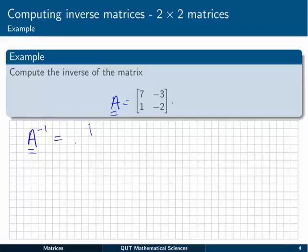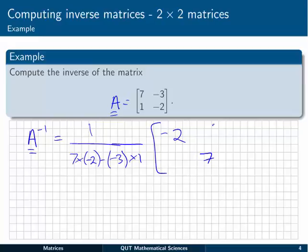A inverse is going to be equal to 1 over, now remember it was AD minus BC, or the determinant if you like. So 7 times minus 2, take away minus 3 by 1. Then we have to switch the diagonal, and put negatives on all the other terms. So that becomes a 3, and that becomes a minus 1.